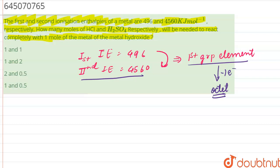So, we basically have a first group element. Suppose this is MOH plus HCl. Where M is first group, hence it is MOH, it will form MCL plus H2O. Similarly,